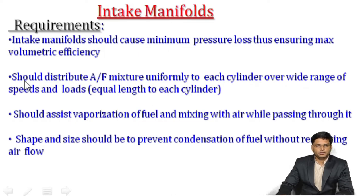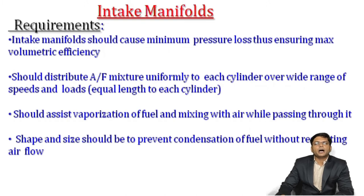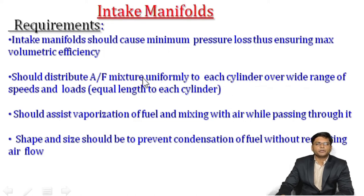The second requirement is that it should distribute the air and fuel mixture uniformly to each cylinder. If the engine is a multi-cylinder — say a 4-cylinder engine — then through the carburetor, the fuel and air mixture should be supplied equally amongst all four cylinders. This is ensured by supplying equal length to every cylinder so that the air and fuel mixture is uniformly transferred to each cylinder.